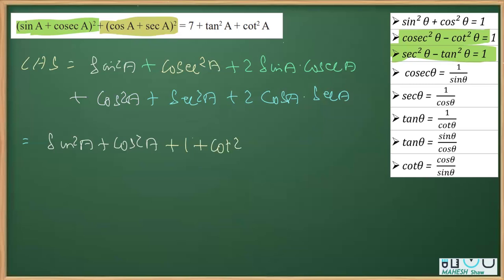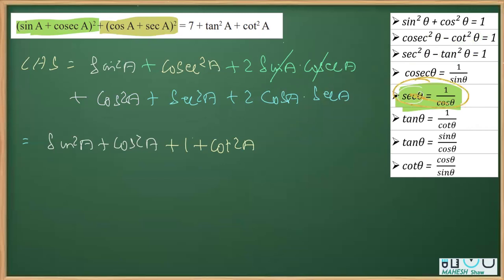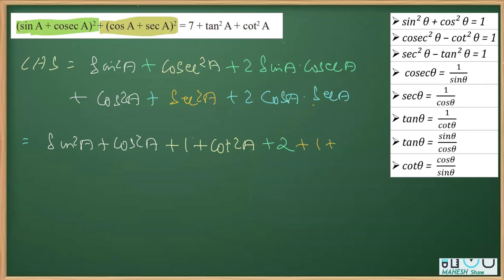Now for the 2·sin a·cosec a term: since cosec is the reciprocal of sine, their product is 1, so 2·sin a·cosec a simply gives plus 2. Next, sec²a can be written as 1 + tan²a by applying the Pythagorean identity.